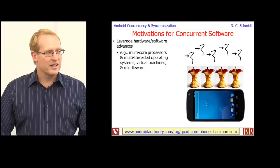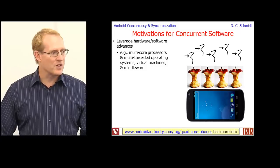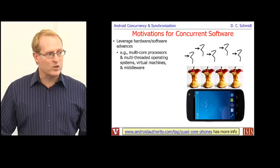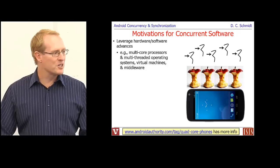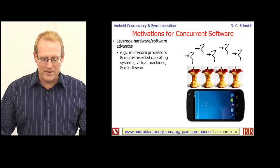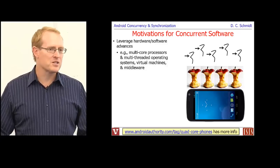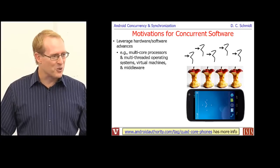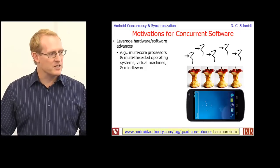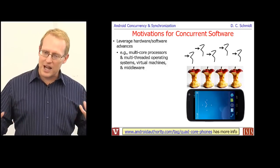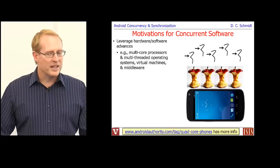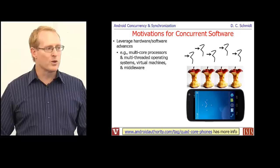It's getting harder to find hardware without multiple processors or cores. Modern smartphones increasingly have quad-core processors, and almost all modern operating systems support multi-threading so you can take advantage of all those cores. Modern virtual machines like Dalvik and the Java virtual machine, as well as modern middleware, also take advantage of multiple cores. So it's very pervasive — you've got to be fluent with it.